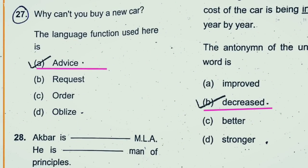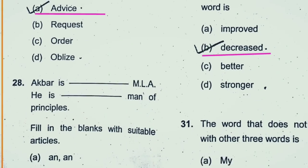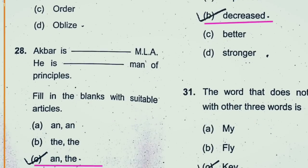Question 27: Why can't you buy a new car? This is a language function question. Here, the sentence is an advice — it's not an order, it's not a request, but it's an advice. 'Why can't you buy a car instead of going on foot?' So option A is the right answer.